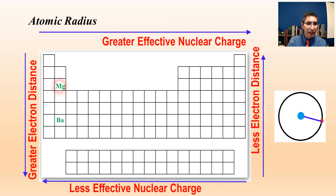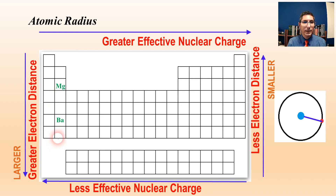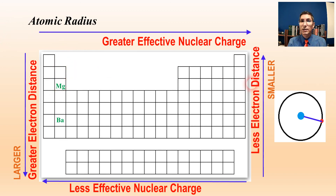So let's try this example here. We have magnesium compared with barium. Hopefully you realize that since there's a greater electron distance from the nucleus to the outermost part of that electron cloud, barium is going to be larger than magnesium. So we can generally say that the farther down you go on the periodic table, you're going to have a larger atomic radius. And likewise, the farther up you go on the periodic table, like magnesium, those are smaller.